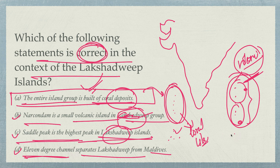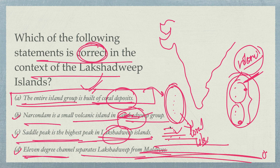Let me explain the degree channels. Starting from the equator at zero degrees going upward: the 8-degree channel divides Lakshadweep and the Maldives. The 9-degree channel divides Minicoy from the rest of Lakshadweep. The 10-degree channel divides the Andaman and Nicobar islands. You should know especially the 8 and 9-degree channels — they are very important.